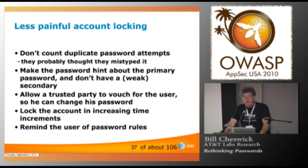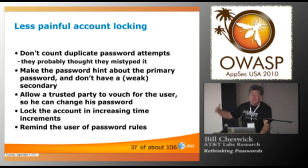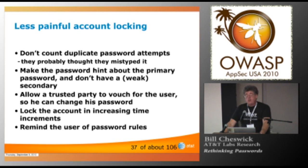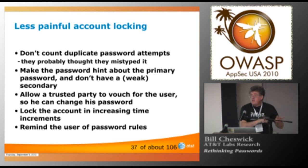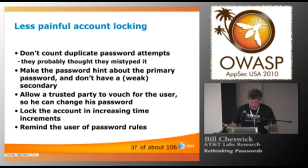Lock the account in increasing time increments. This has been done by login since the dawn of the third age. Exponential back off. So, you can guess a lot, but you start guessing slower and slower. Maybe you lock the account for not very long. And it doesn't hurt to remind the user of the password rules. Maybe even give the name of the authenticator, because people often don't know whose rules they're playing by. Inside my own company, I go to some sites, and it's a different authentication server. So, I'm starting to enter passwords from other systems into this system. That's not good. I'm leaking data to somebody else.